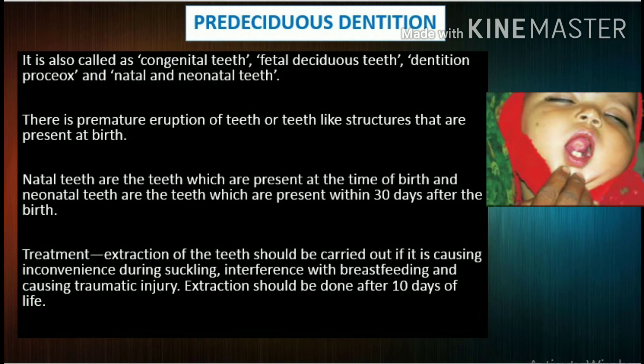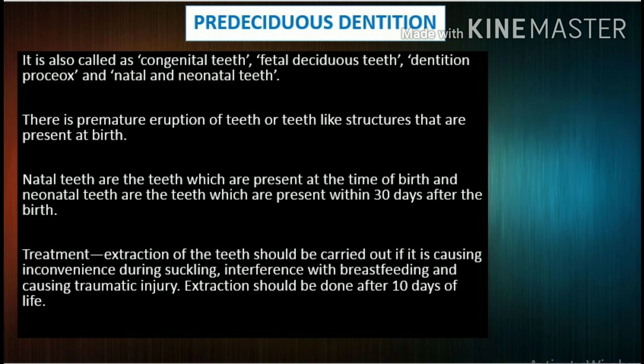Predeciduous dentition, also called congenital teeth, fetal deciduous teeth, dentition praecox, and natal and neonatal teeth. There is premature eruption of teeth or tooth-like structures present at birth. Natal teeth are present at the time of birth, and neonatal teeth are present within 30 days after birth. Treatment: extraction should be carried out if the tooth is causing inconvenience during suckling, interference with breastfeeding, or causing traumatic injury. Extraction should be done after 10 days of life.